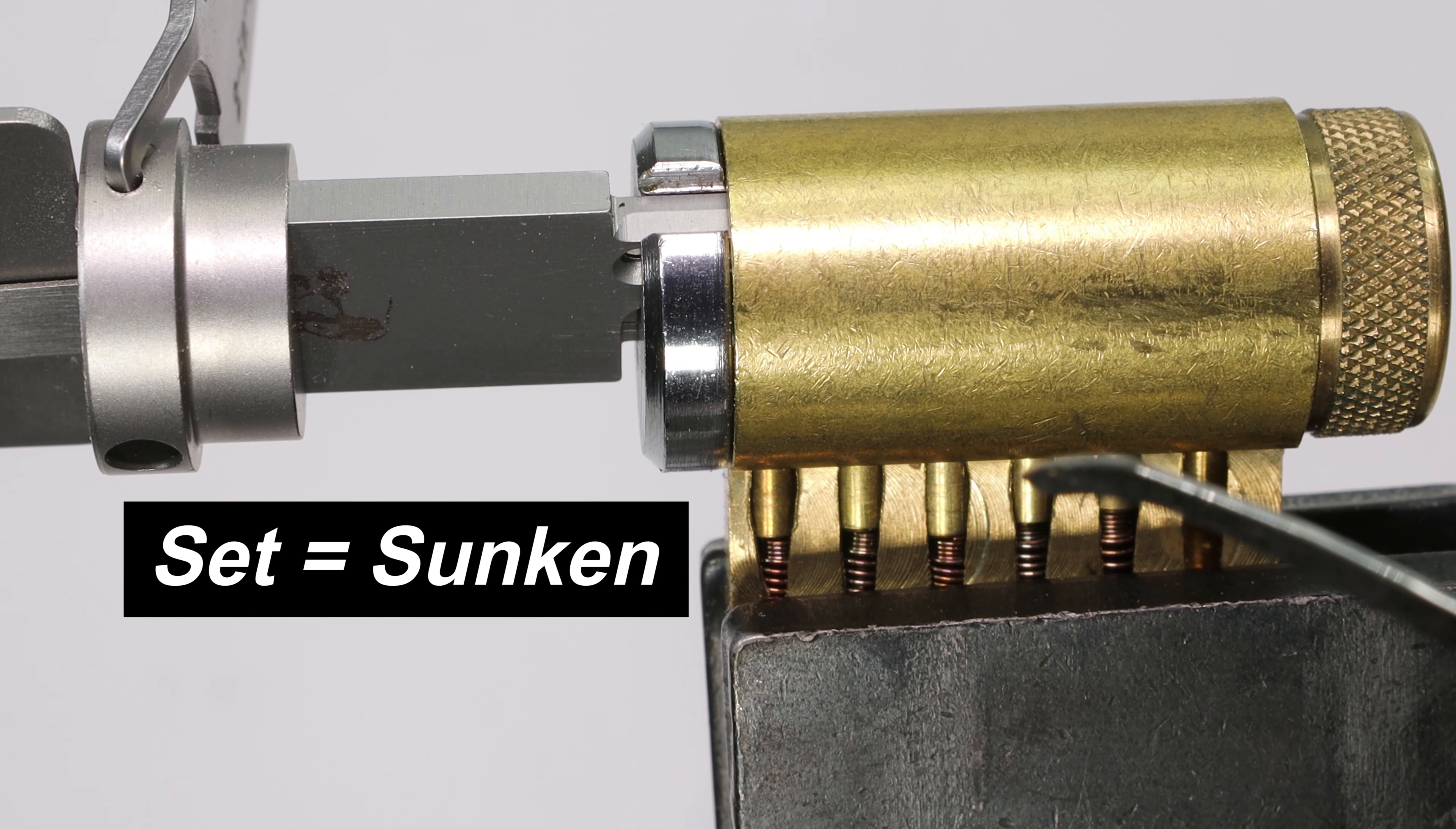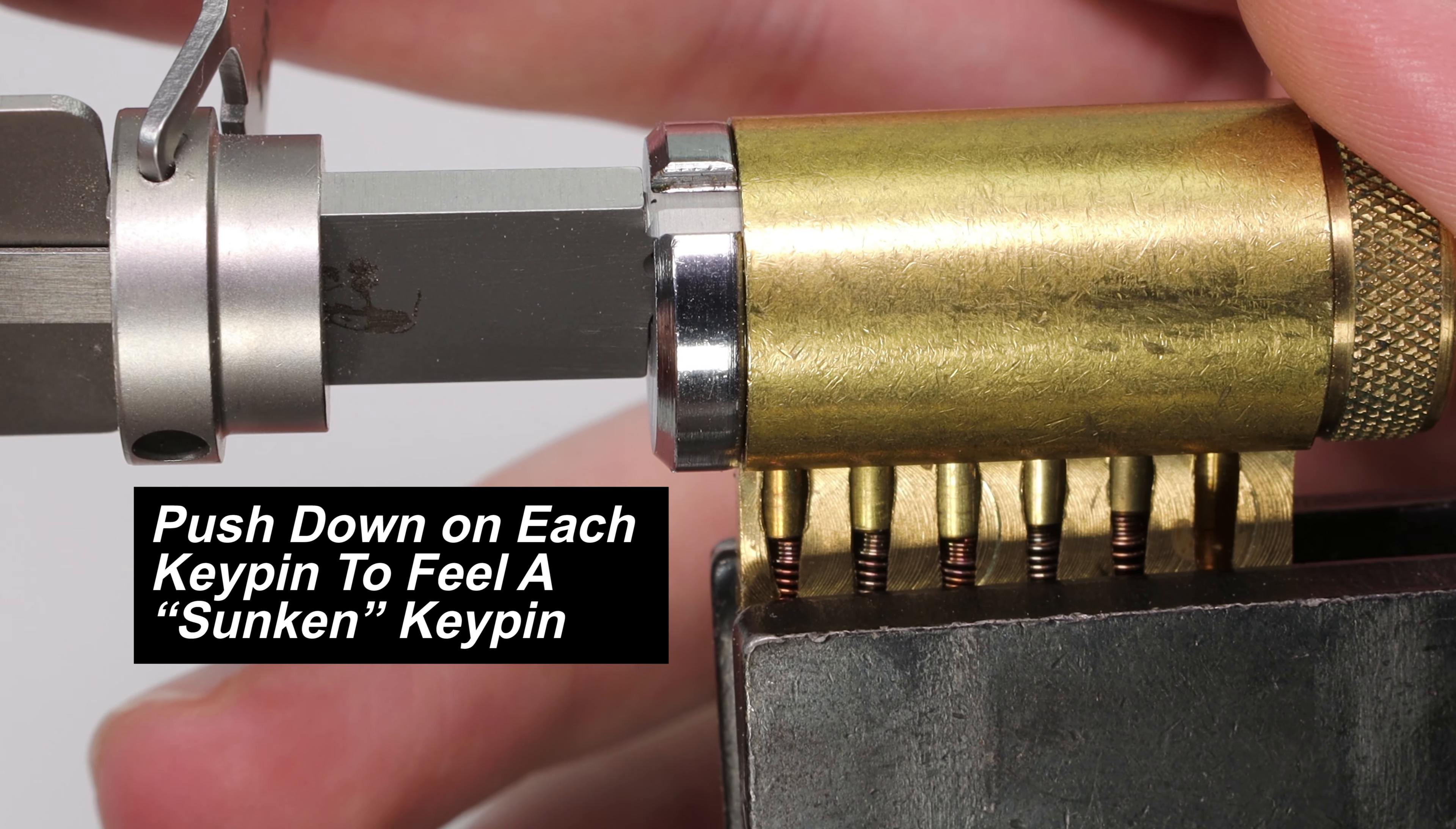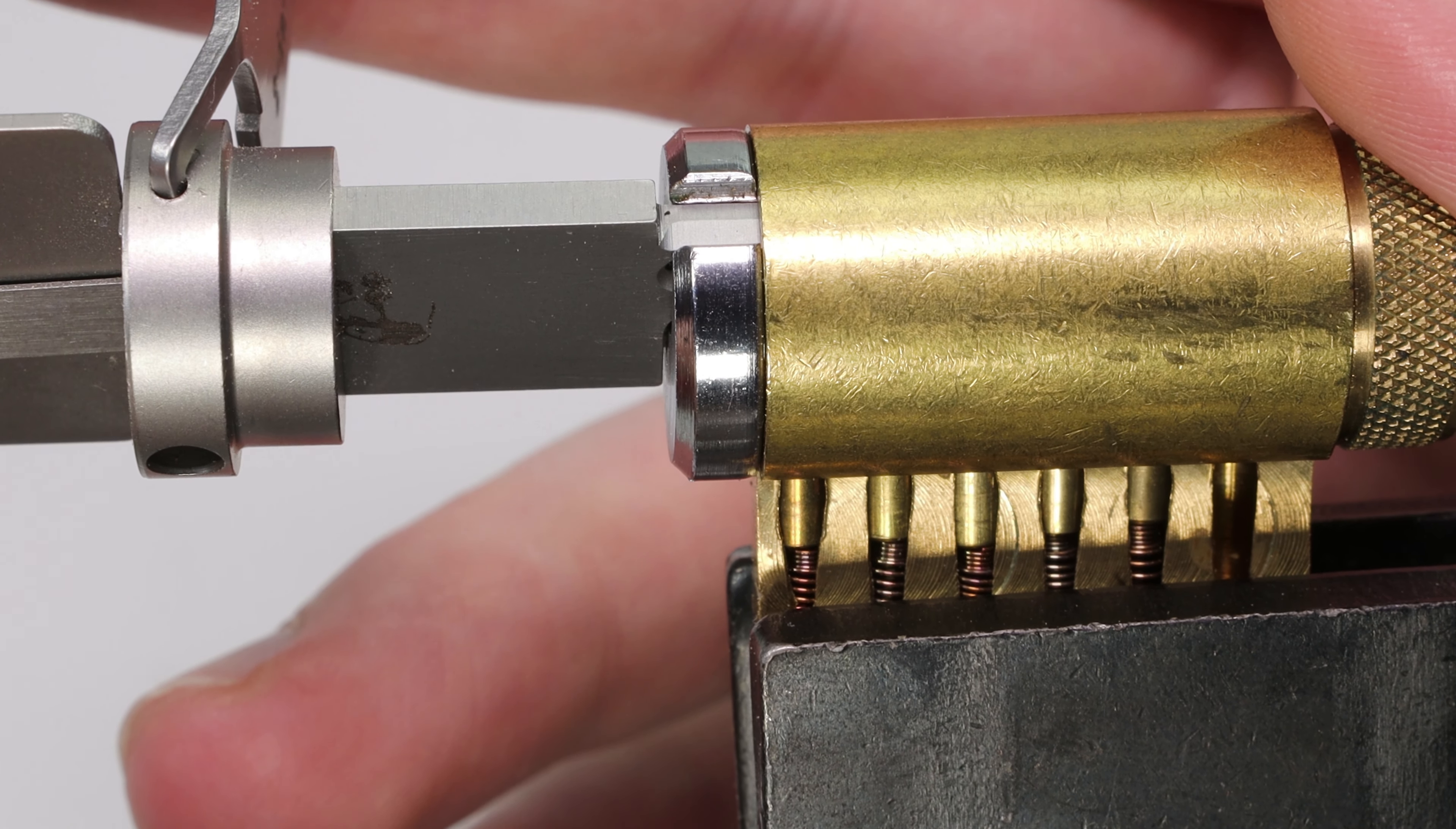It is going to just sit down there, so when you're feeling for the set pin, you're going to just feel a pin that has sunken all the way down. It's going to not be springy, not be binding. It's just going to feel sort of sunken. So if you want to emulate what that feels like, what you can do is pick your lock open, and then you can just go through one at a time and just push down on each key pin and just sort of feel what that sunken feeling is like.